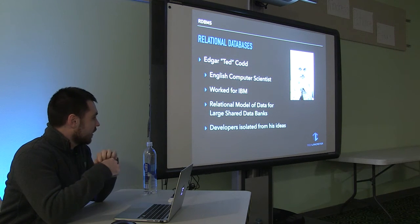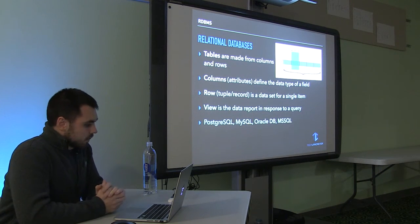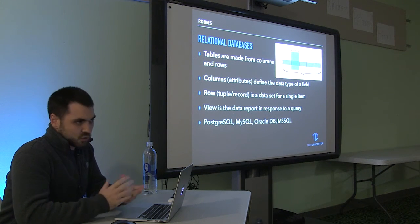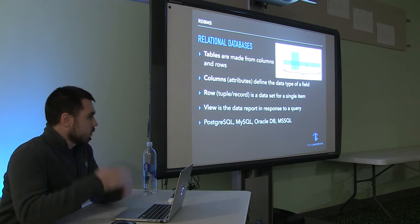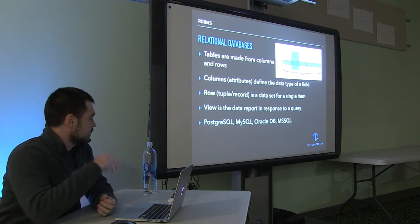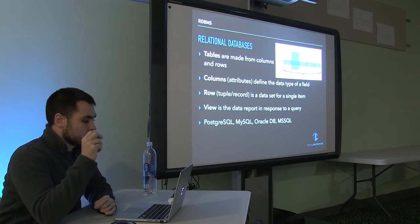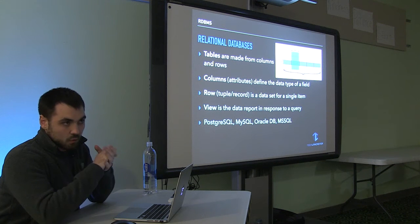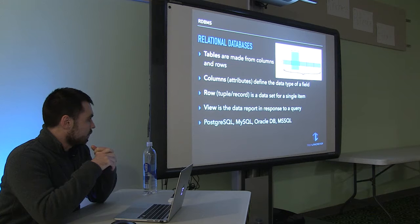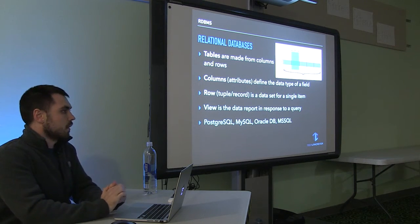Eventually his product won out. He left IBM, started his own company, and I think Oracle bought it in the end. What came out of his work at IBM is the relational database as we know it. Tables are made up of columns and rows. The columns have attributes that specify the data types that can go in each column, and values are inserted into rows. Any queries done against the database come back as a view. The big players today are Postgres, MySQL, Oracle, and MSSQL.